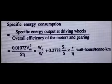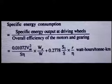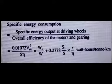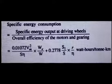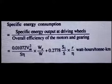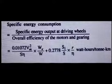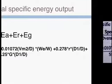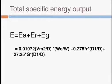The expression for specific energy consumption is: specific energy output at driving wheels divided by the overall efficiency of the motors and gearing. The final equation of specific energy consumption is: 0.01072 × Vm squared divided by (schedule speed × efficiency), multiplied by W_r by W, plus 0.2778 × S1 by S, multiplied by r divided by efficiency — expressed in watt-hours per ton-kilometer. This is the final equation for specific energy consumption.